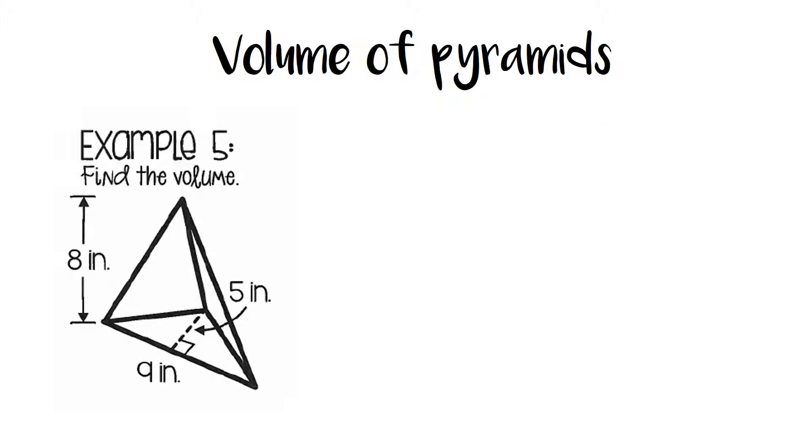Okay, now we're looking at example number 5. So remember our formula, one-third times the big B, or the area of the base, times the height. So in this picture we have a triangular base where 9 is the tiny b in our triangle formula, and 5 is the tiny h in our triangle formula for the area of a triangle. And then from the vertex all the way down to the center of that triangle is our height of the entire pyramid, which is 8 inches.